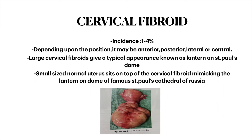Cervical fibroids have an incidence of about 1 to 4%. Depending on position they may be anterior, posterior, central, or lateral. Large cervical fibroids give a typical appearance known as 'lantern on Saint Paul's dome' — the small normal-sized uterus sits on top of the cervical fibroid, mimicking the lantern on the dome of the famous Saint Paul's Cathedral.